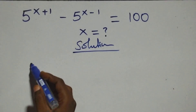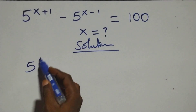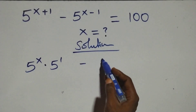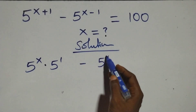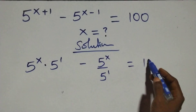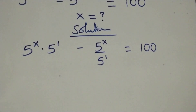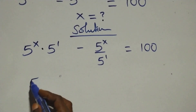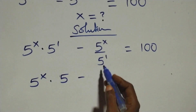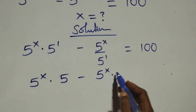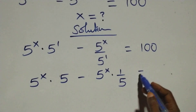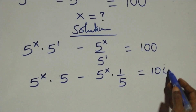What we have here: I'll write this as 5 raised to power x times 5 raised to power 1 minus 5 raised to power x over 5 raised to power 1, then equal to the right-hand side. This is the same as 5 raised to power x times 5, that's 5, then minus 5 raised to power x times 1 over 5, which is 1 over 5, equals the right-hand side.